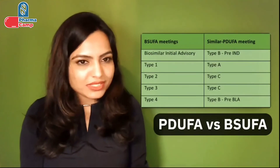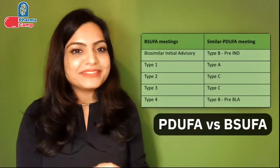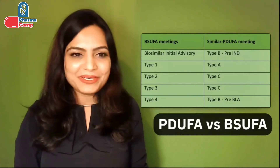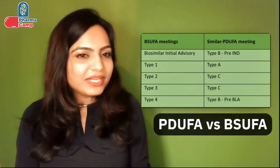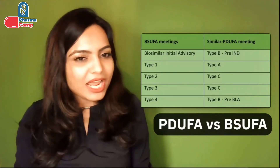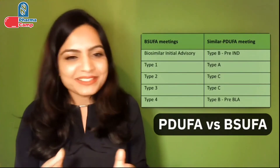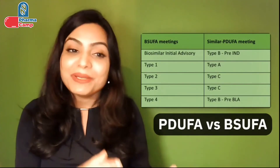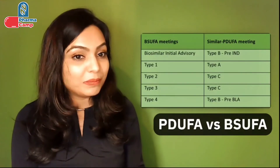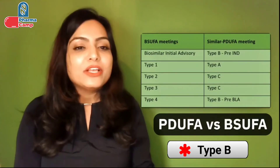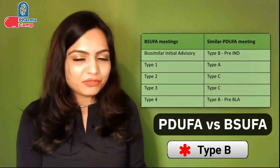The BSUFA Biosimilar Initial Advisory meeting (BIA) is similar to Type B Pre-IND. BPD Type 1 is similar to Type A meetings. BPD Type 2 and Type 3 meetings are similar to Type C meetings. BPD Type 4 is similar to Type B Pre-BIA meetings. These are the similarities between both kinds of meetings.